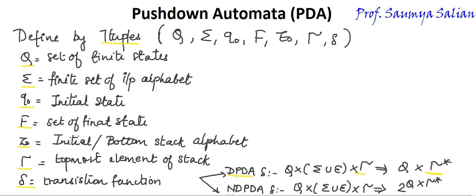Similarly, the non-deterministic PDA transition function is: Q cross sigma union epsilon cross tau goes to 2 to the power Q cross tau star.